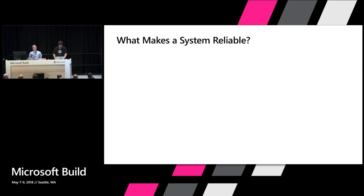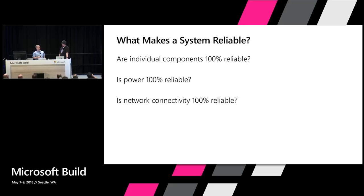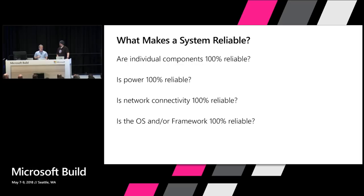We want to put some context first, because oftentimes we get into a conversation of just because you can doesn't really mean you should. That's a theme around what we'll see today. Is everything going to be 100% reliable? Is power reliable? Is the network reliable? Is the OS and framework reliable? There are all these things you have absolutely no control over. My framework is 100% reliable — true story, I'll show you later. And then there's whether your code is reliable.